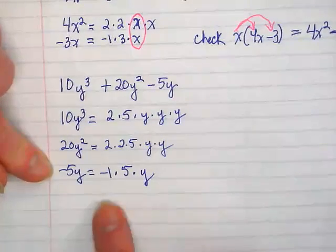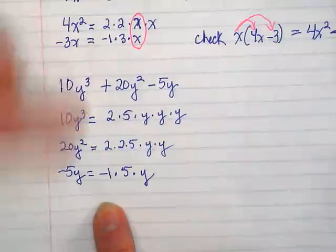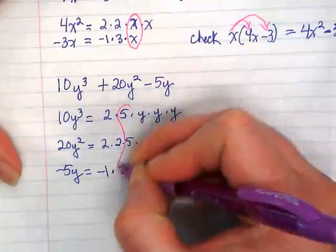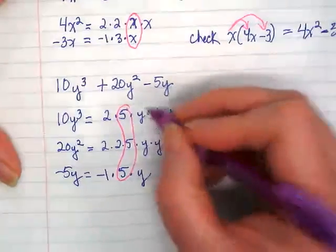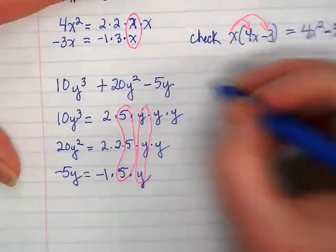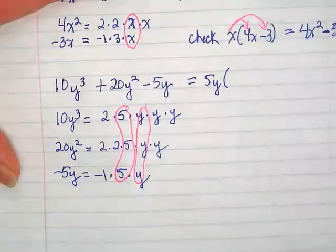This last one really kind of determines because it has so little in it. What it has that are in common up above is what we're going to end up using. We have a 5. And a y.